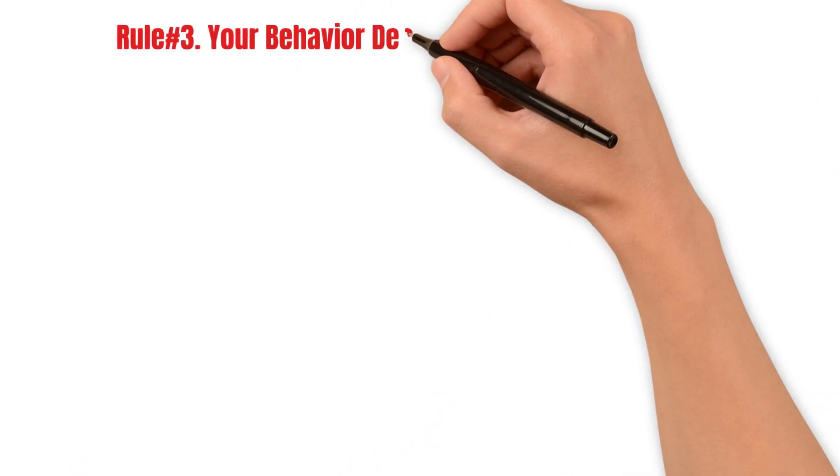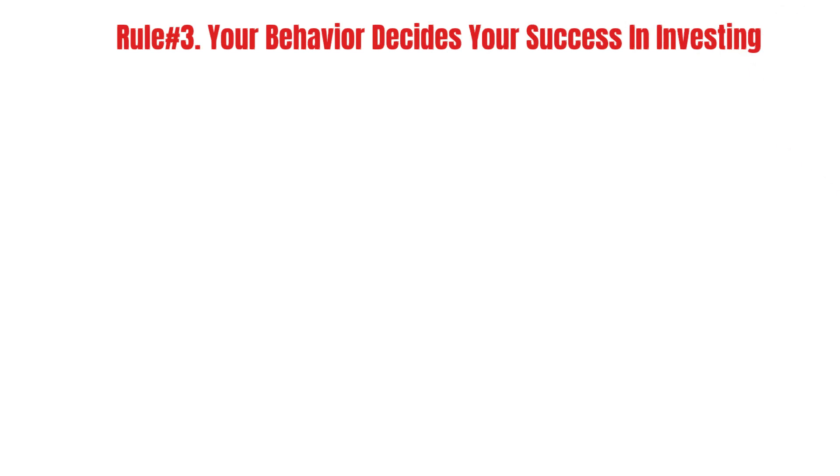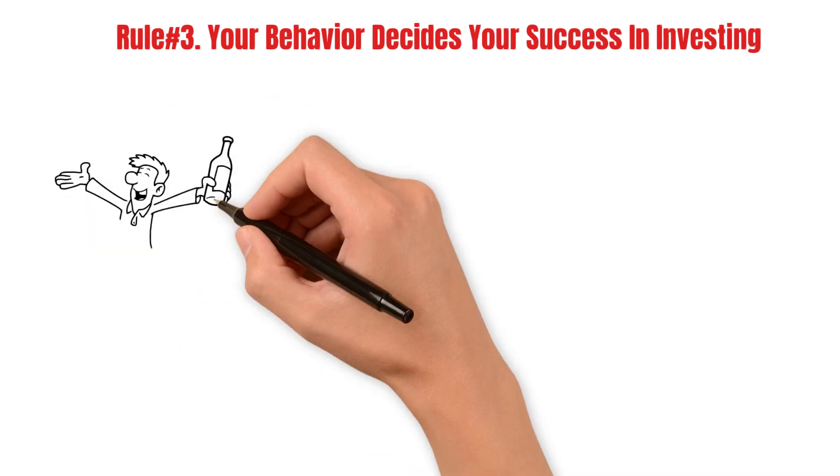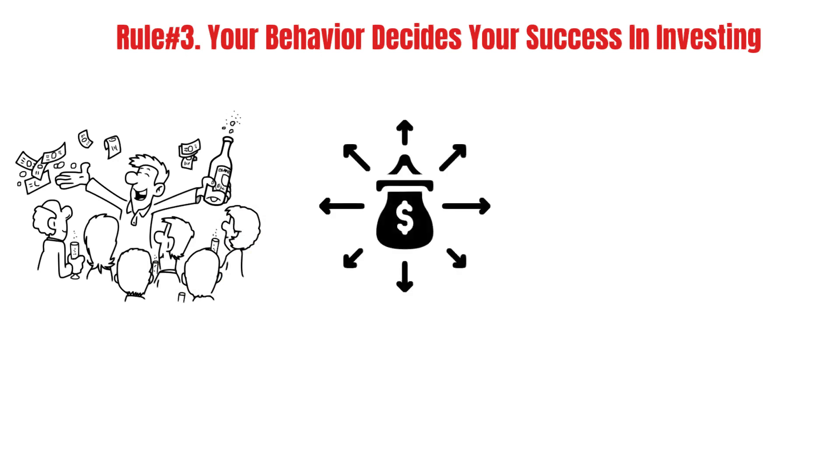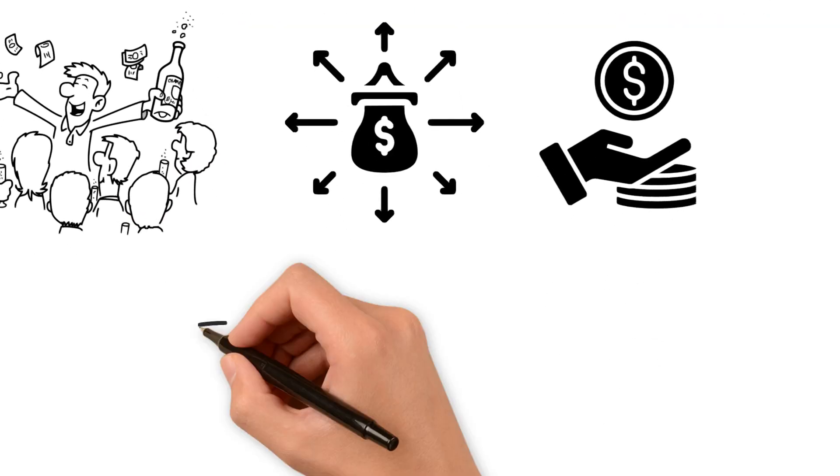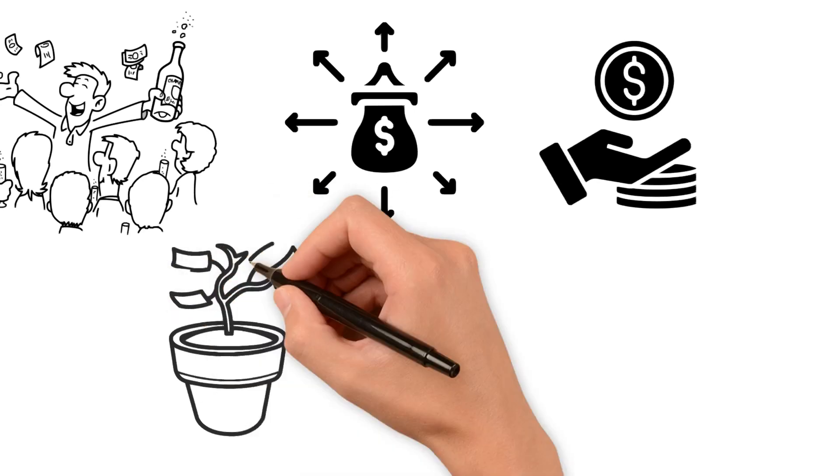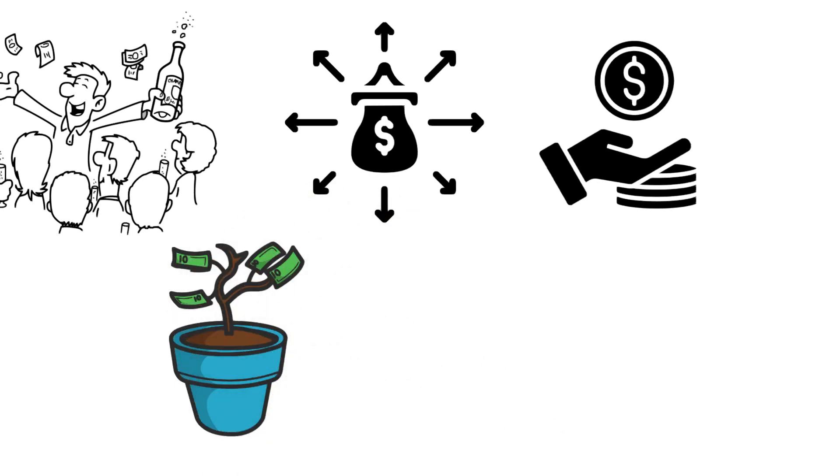Rule number three: Your behavior decides your success in investing. Investing is easy when you keep it simple. Invest long-term, create a diversified portfolio, watch your costs, and let compounding work its magic. It is quite a simple process, right?